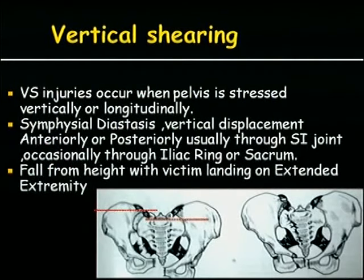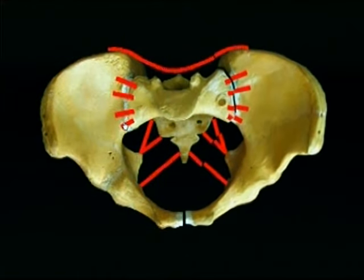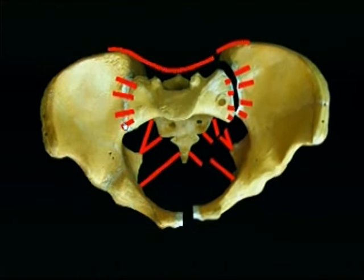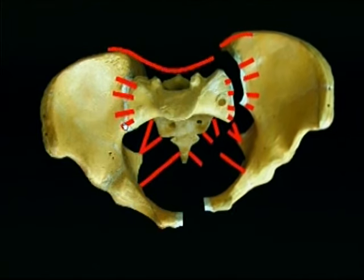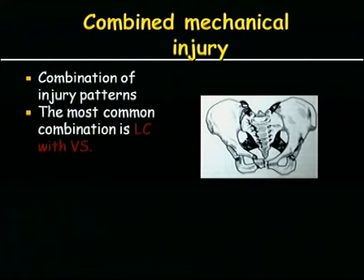Vertical shear injuries occur when a patient falls from height. There is vertical displacement seen on imaging. With a fall from height with an extended leg, the pelvis is displaced vertically, breaking all ligaments: sacrotuberous, sacrospinous, anterior sacroiliac, and posterior sacroiliac — the pelvis moves superiorly. Combined injury is a combination of LC with APC, LC with vertical shear; the most common combined pattern is LC with vertical shear.